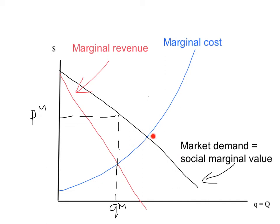The social welfare maximising quantity will be where social marginal cost and social marginal value intersect. So the optimal production from a social point of view is out here at Q star. It's clear that the socially optimal quantity, Q star, is greater than the monopoly profit maximising quantity, QM.